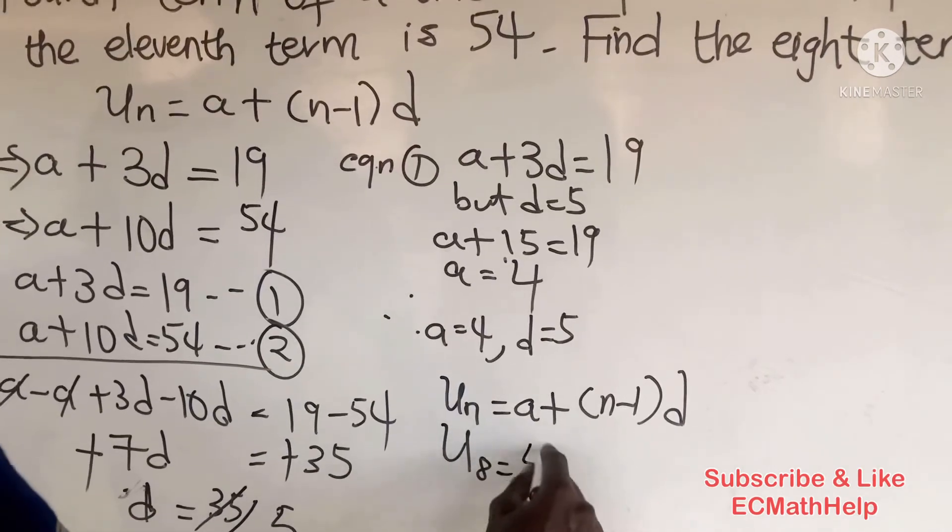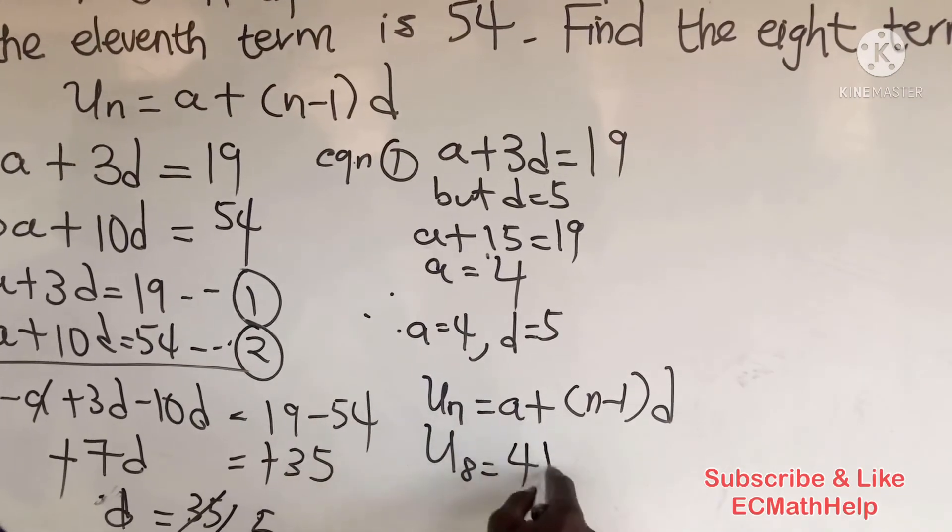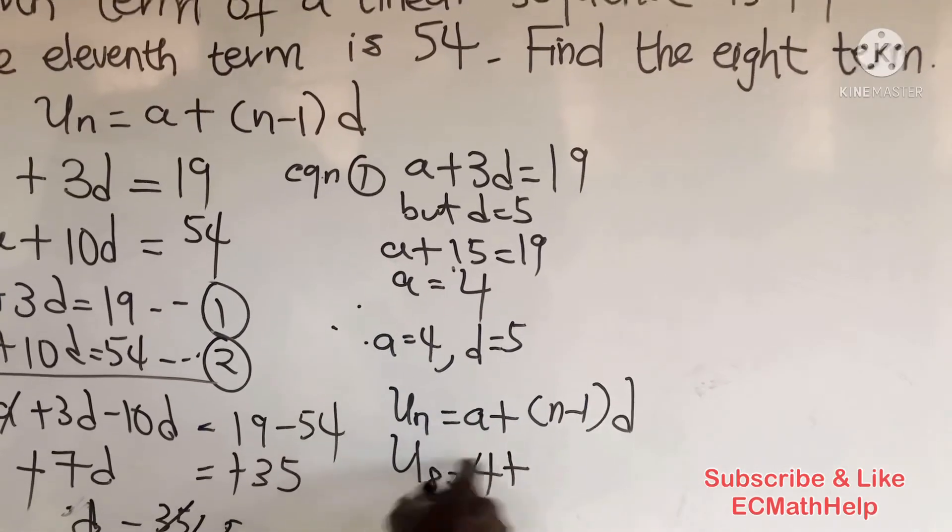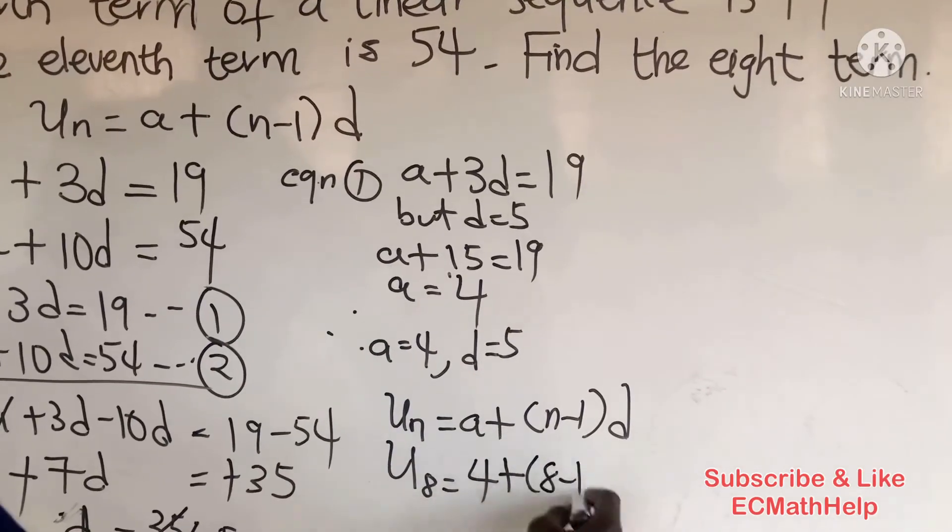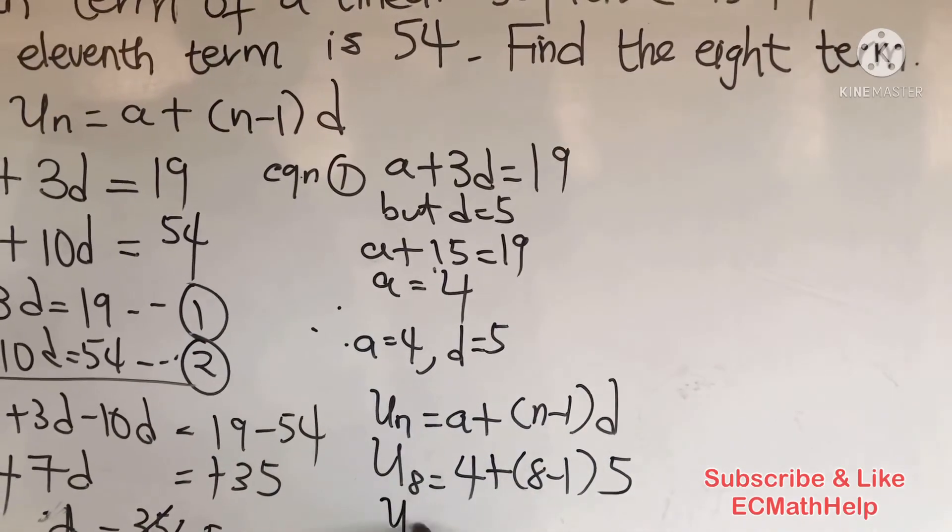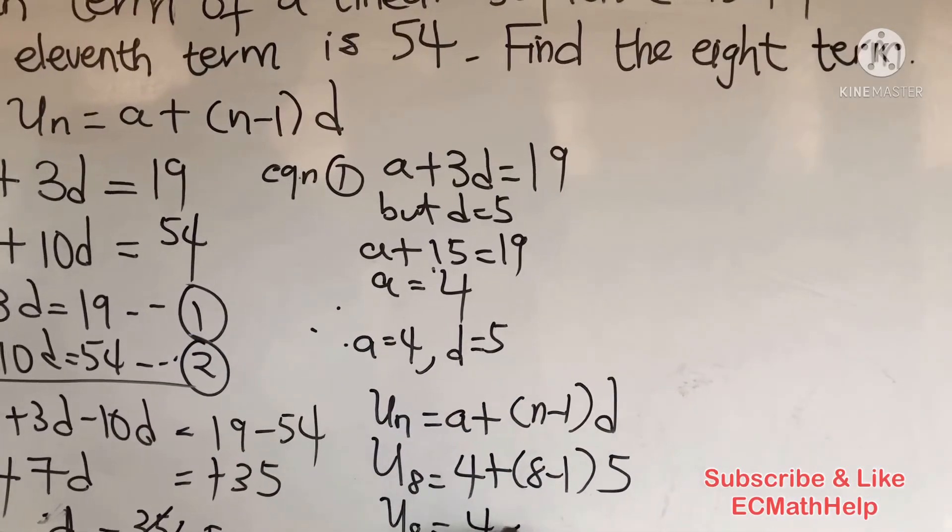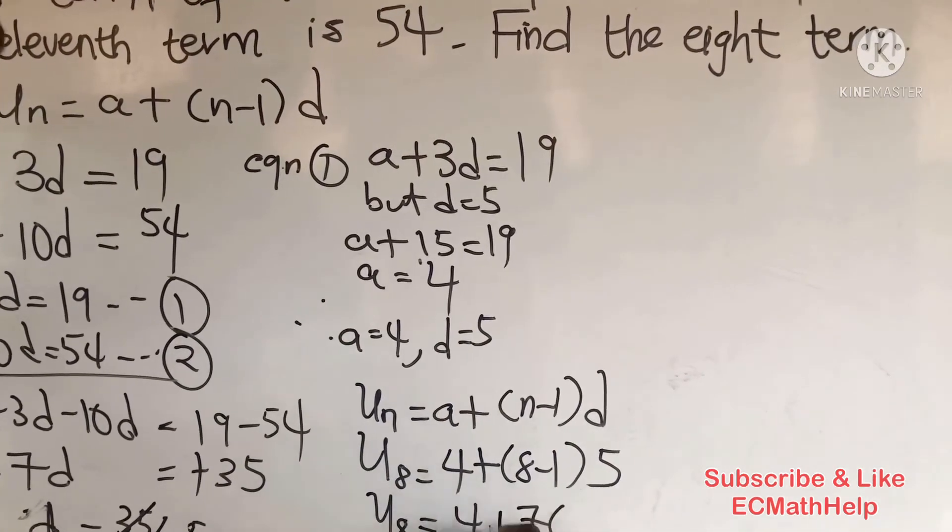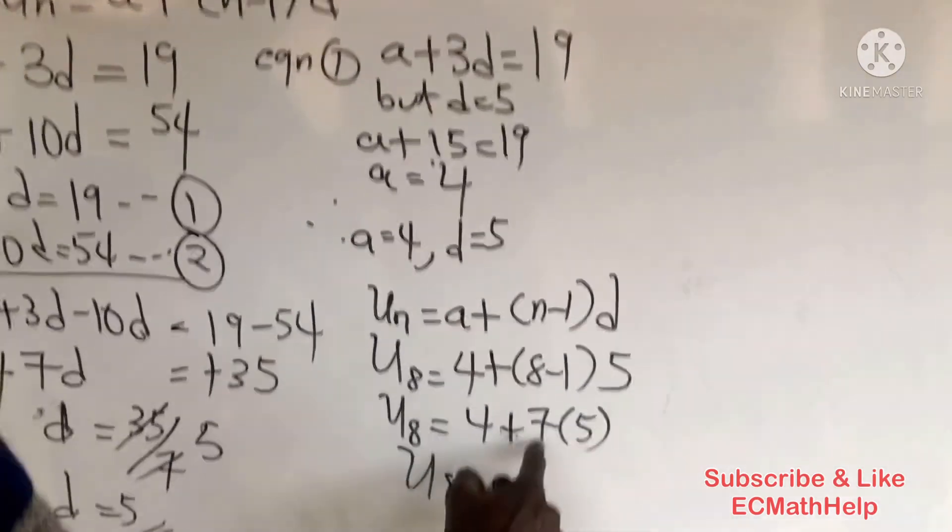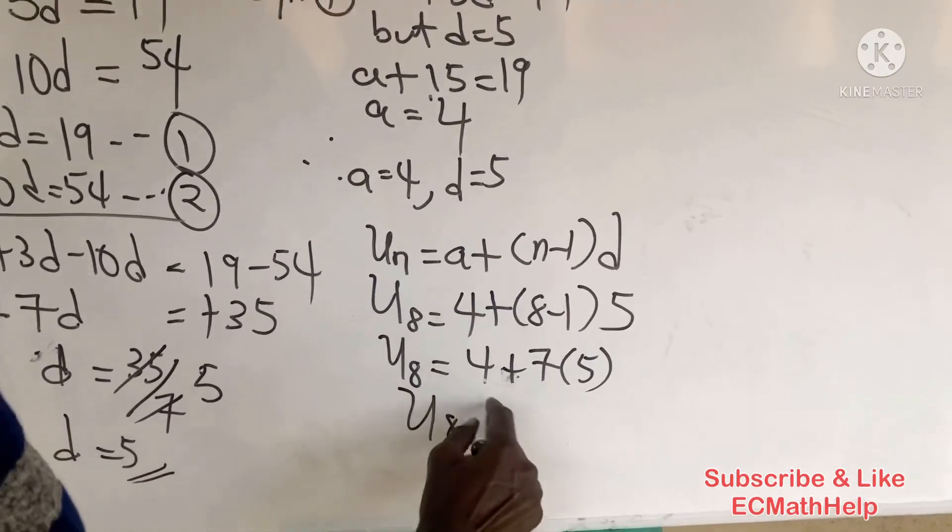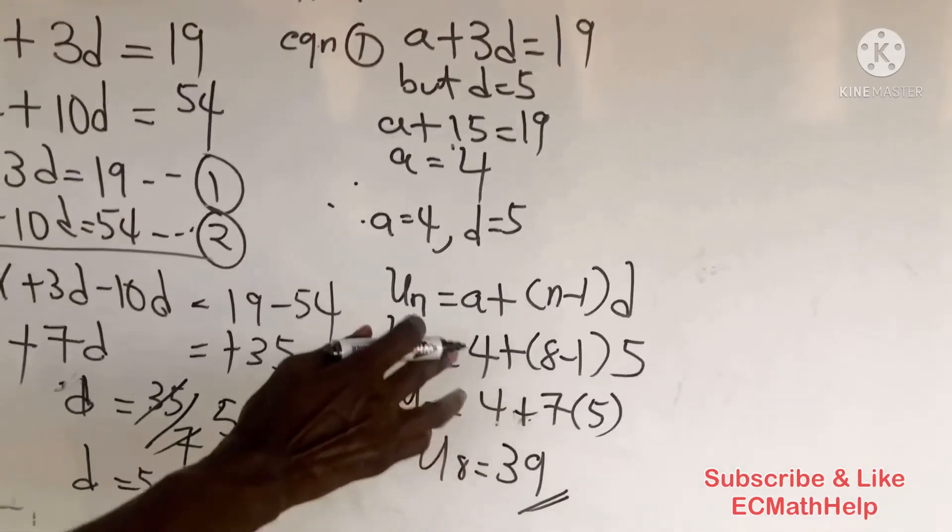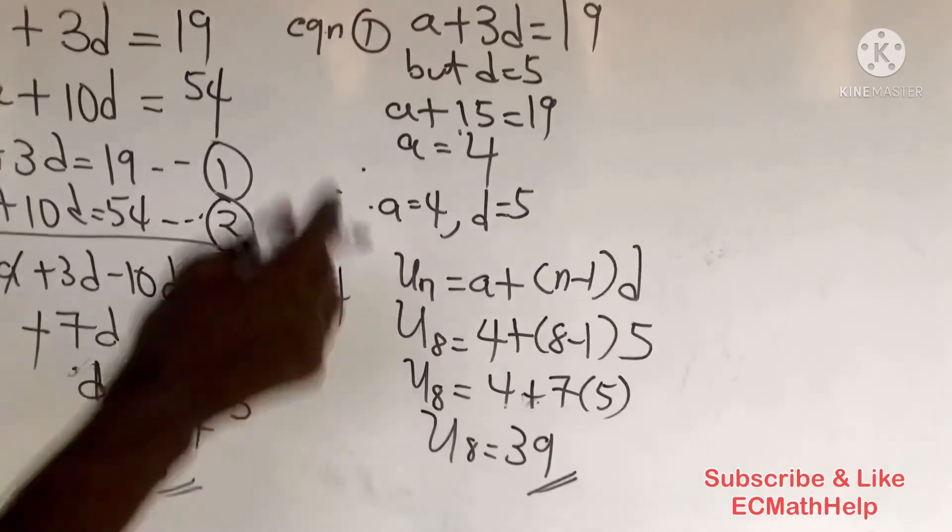U₈ equals the first term, which is 4, plus (8 minus 1) times the difference, which is 5. So U₈ = 4 + 7 times 5, which equals 4 + 35, giving us 39. Thanks for joining us on Math Help. Kindly subscribe and like